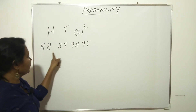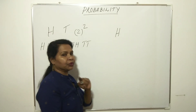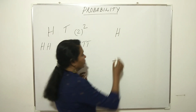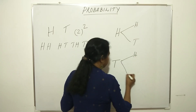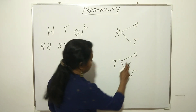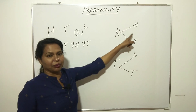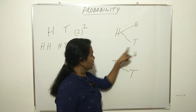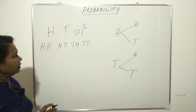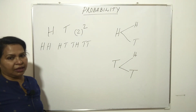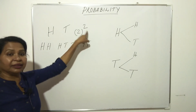I will take 2 raised to 3 as an example. For three coin tosses, the total number of outcomes is 2 raised to 3, which equals 8. One coin toss gives one head or one tail. For three tosses, we list all combinations. The sample space has 8 outcomes.